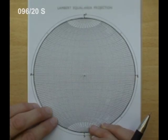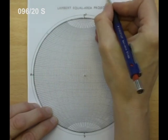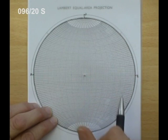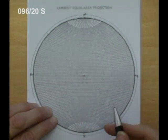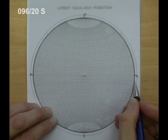Plotting poles to planes. We'll plot the pole to a plane with a strike of 096 and a dip of 20 degrees to the south. So we first mark on the strike: 90, 92, 94, 96.